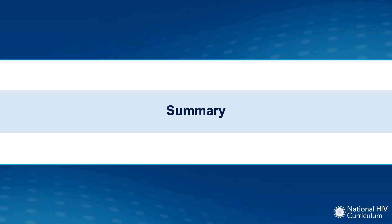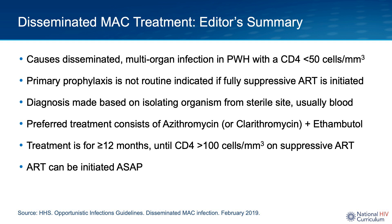In summary: MAC is a non-tuberculous mycobacteria that can cause disseminated multi-organ infection in people with HIV with a CD4 count less than 50. Primary prophylaxis is not routinely indicated if a fully suppressive ART regimen has been initiated. Diagnosis is made when individuals present with clinical symptoms suggestive of disseminated MAC disease and the organism is isolated from a sterile site, usually blood. Preferred treatment consists of azithromycin or clarithromycin plus ethambutol for 12 months or longer, until the individual has a CD4 count greater than 100 on a fully suppressive ART regimen. Regardless of MAC diagnosis, ART should be initiated as soon as possible.